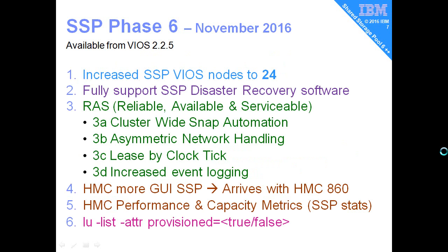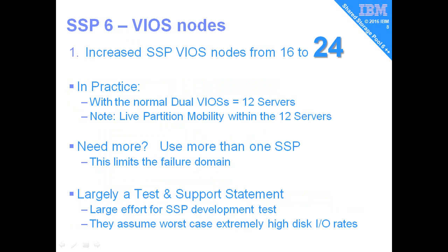I'm now going to go through these nine new features, a couple of slides on each. The big announcement is that the Shared Storage Pool can now go up to 24 VIO servers. In normal practice, people use dual VIO servers, so we're talking about 12 servers. A little reminder that if you're doing live partition mobility, it has to be within the Shared Storage Pool so that the disks are available on the source and the target. If you need more than 12 servers, you just have more than one Shared Storage Pool, which actually limits the failure domain.